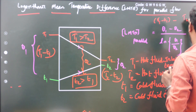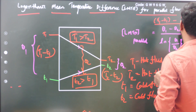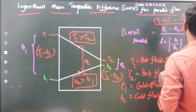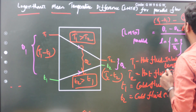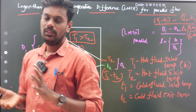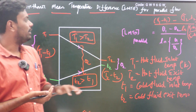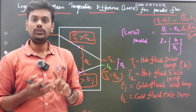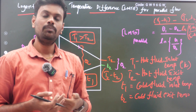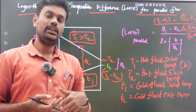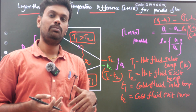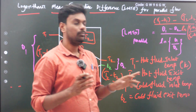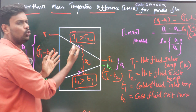The LMTD formula is: theta 1 minus theta 2 divided by ln of theta 1 by theta 2. I elaborated theta 1 and theta 2 so that it became this form. In the question paper they will give the inlet temperature of the hot fluid, exit temperature of the hot fluid, or inlet temperature of cold fluid and exit temperature of the cold fluid, and they will ask us to find out the LMTD.